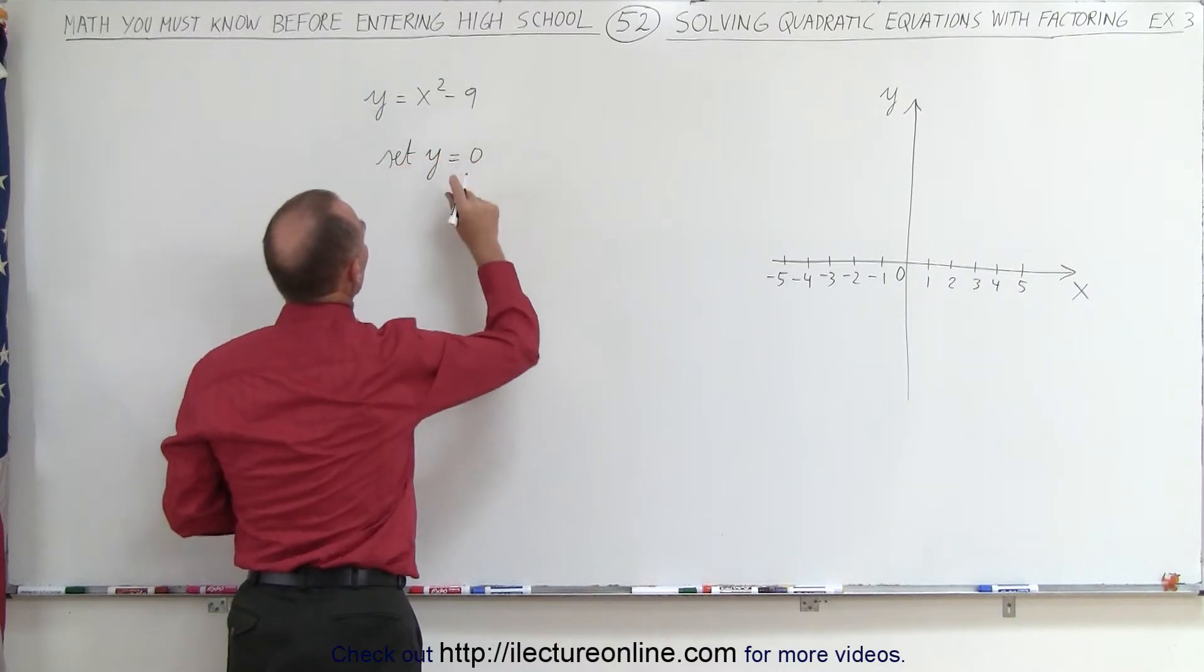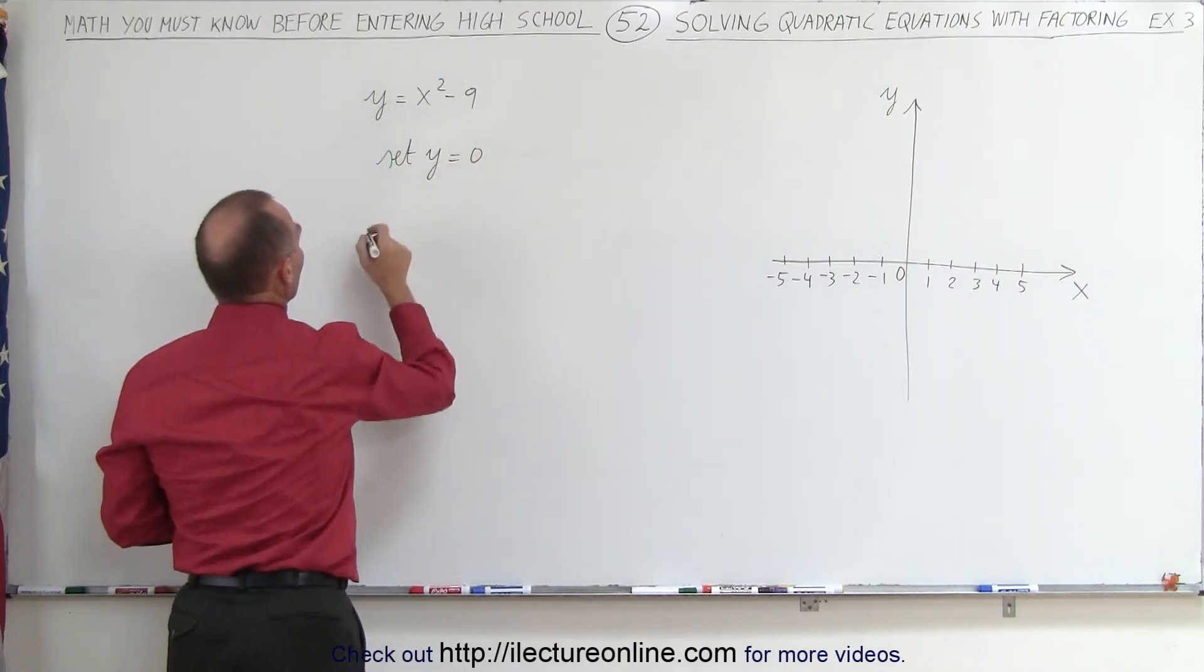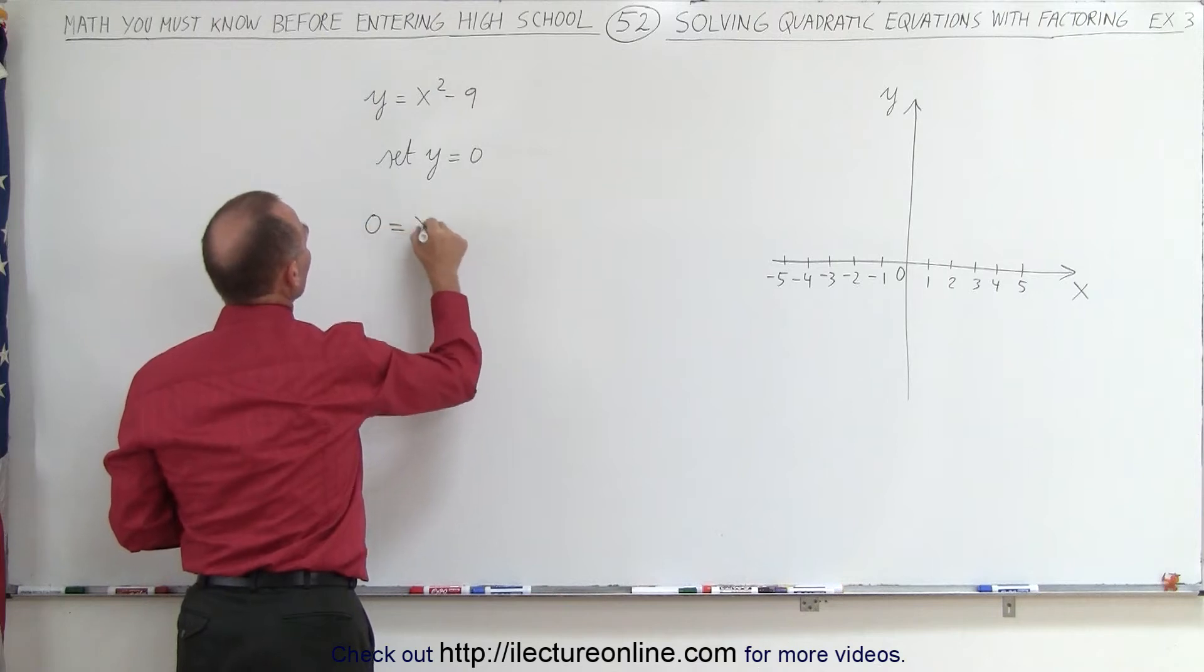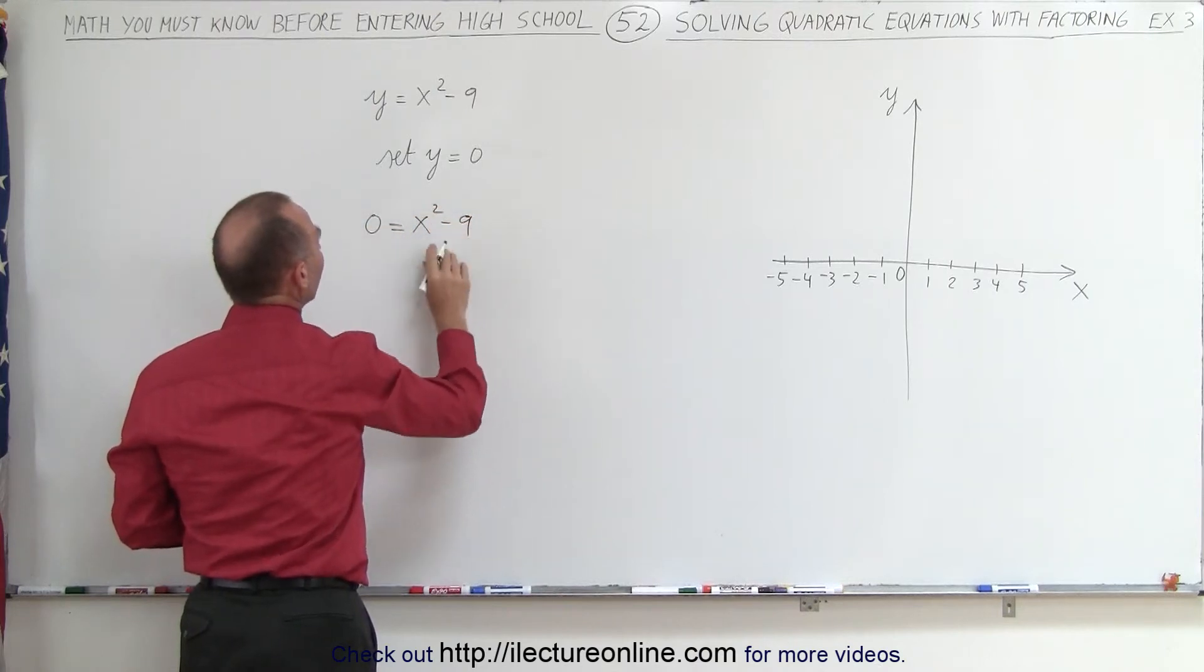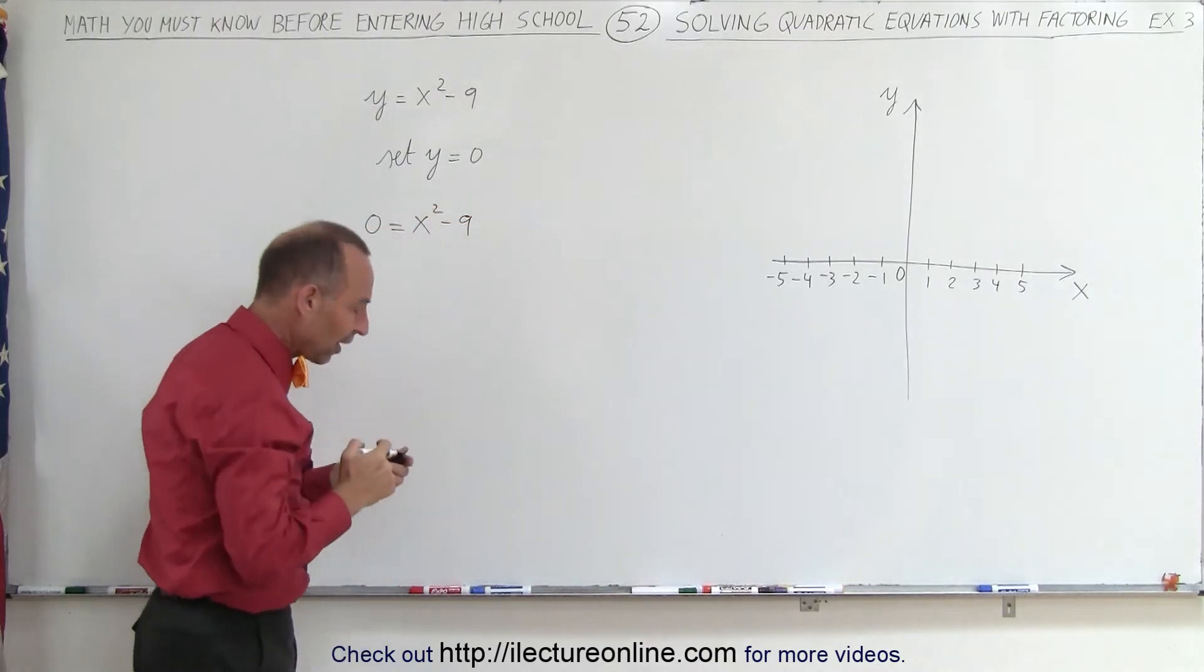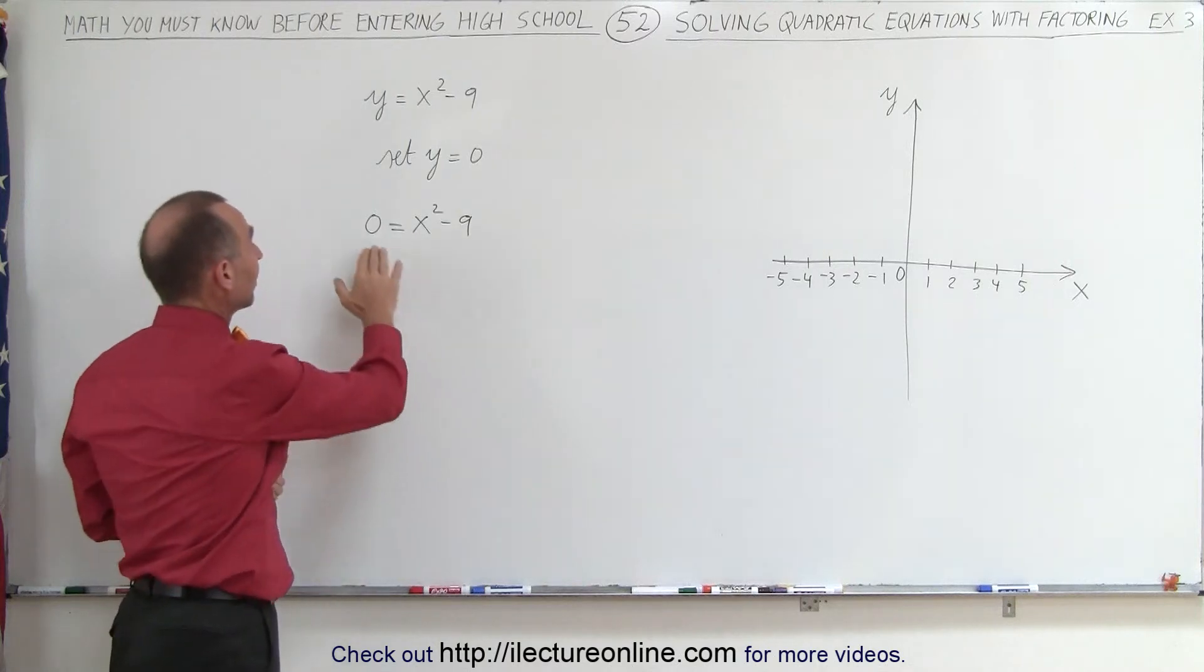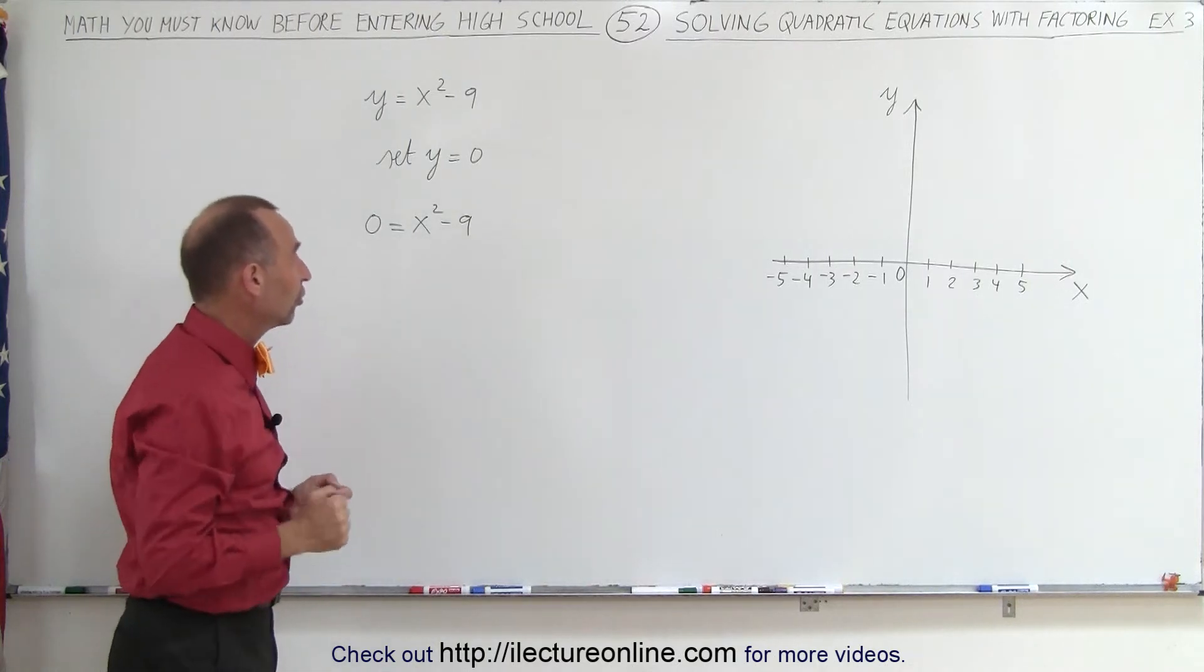Set y equal to 0, which means that this quadratic equation now becomes 0 equals x squared minus 9. And now we're looking for the values of x that will set the left side equal to the right side that will solve this equation.